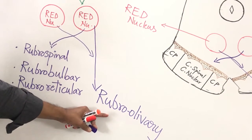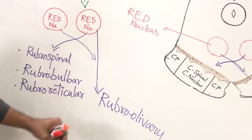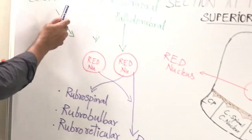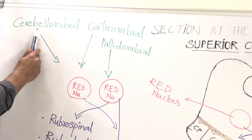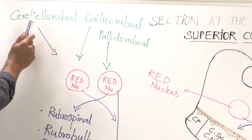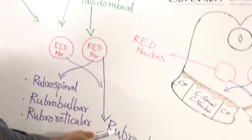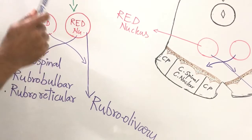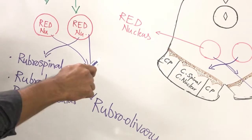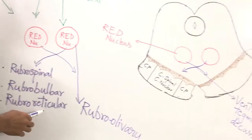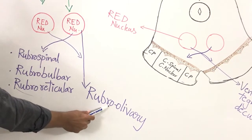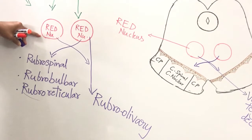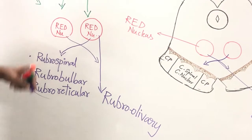The rubro-olivary connection is important for forming a feedback circuit between the red nucleus and the cerebellum: cerebellorubral fibers come from the cerebellum to the red nucleus, and rubro-olivary fibers go to the inferior olivary nucleus, which then projects back to the cerebellum — forming a neuronal circuit between the cerebellum, red nucleus, inferior olivary nucleus, and back to the cerebellum. Any injury to the red nucleus leads to contralateral tremor.